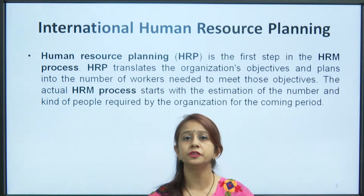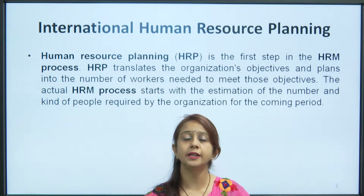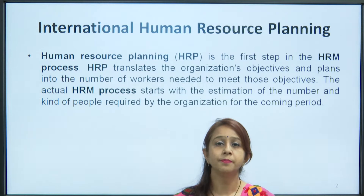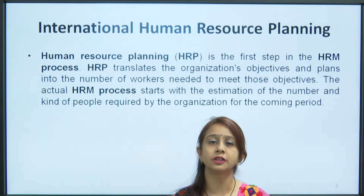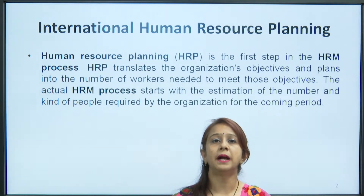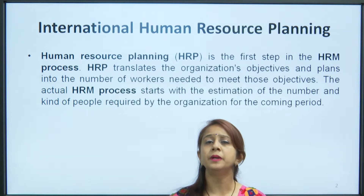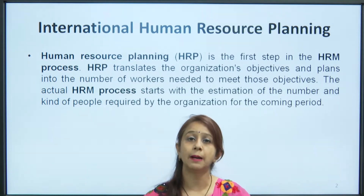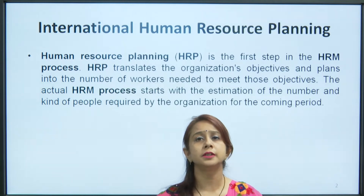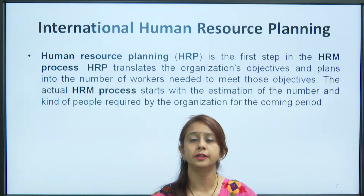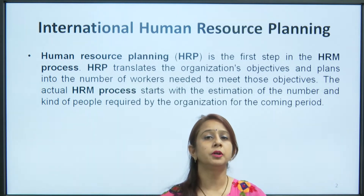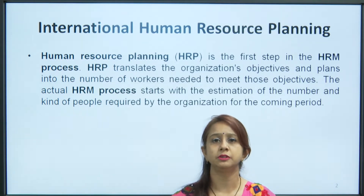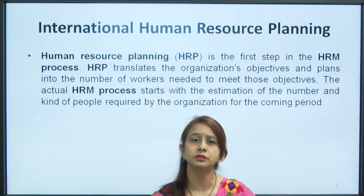We have four kinds of structure: the functional structure, area structure, geographic area structure, and the matrix structure. Whenever the company decides on any of these, the matrix structure is considered the best for the global environment because it gives a combination of two or more dimensions in the organization structure.